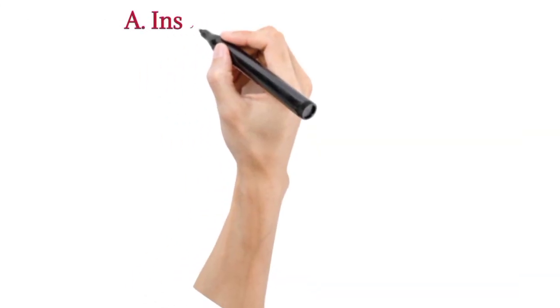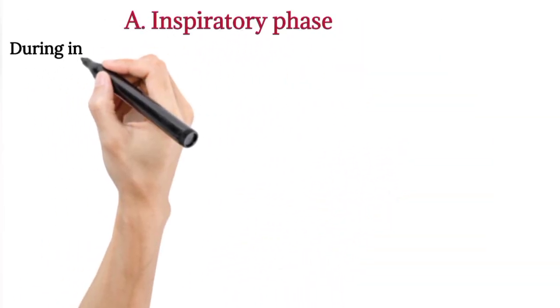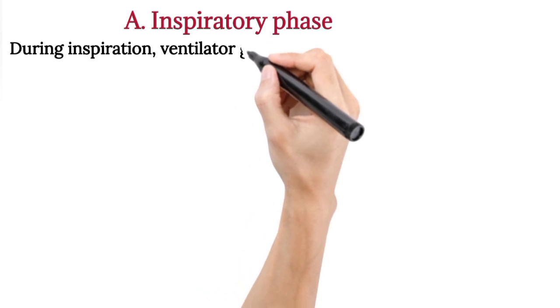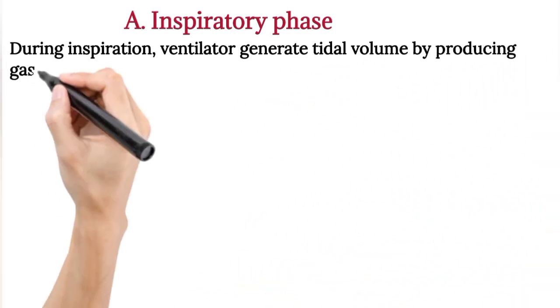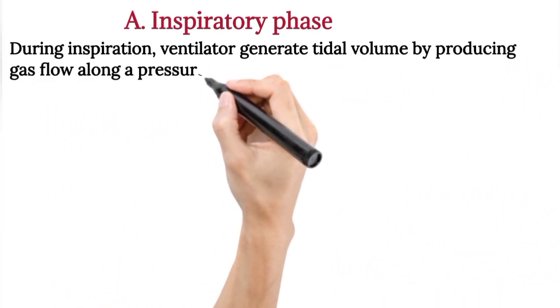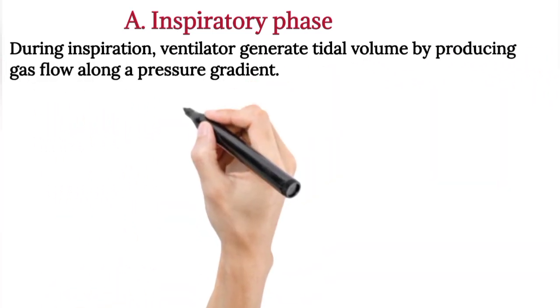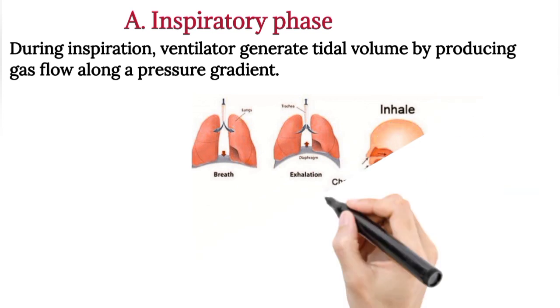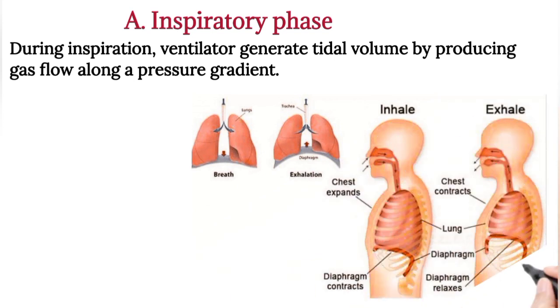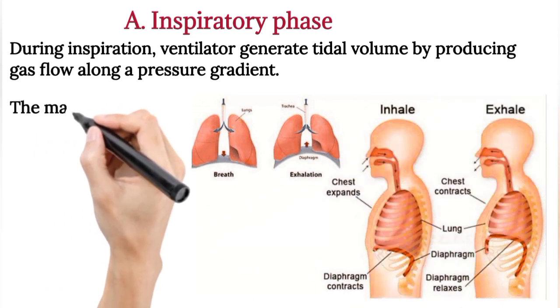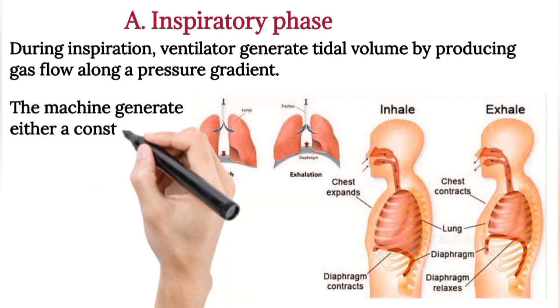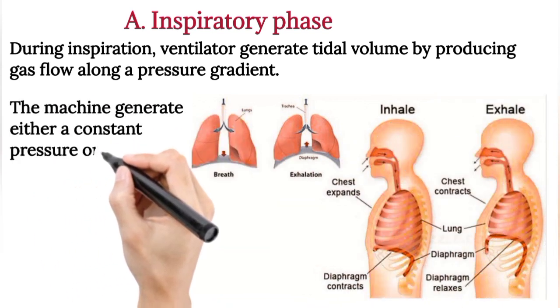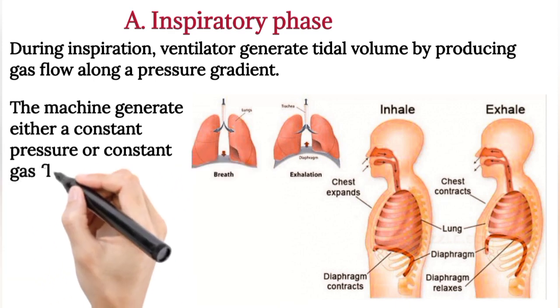During the inspiratory phase, the ventilator generates tidal volume by producing gas flow along a pressure gradient. The machine generates either a constant pressure or a constant gas flow rate.